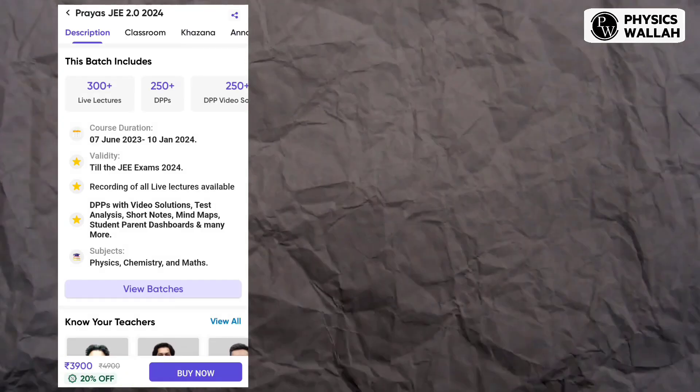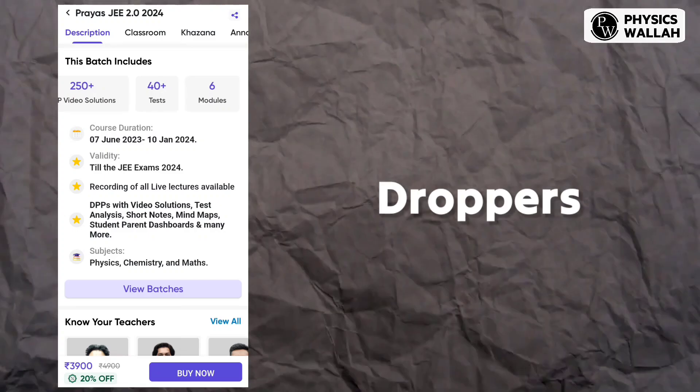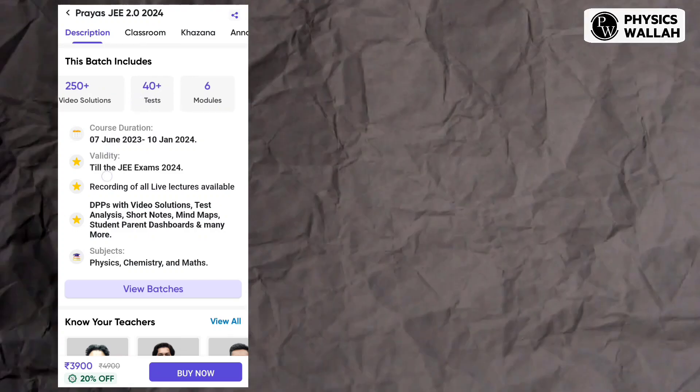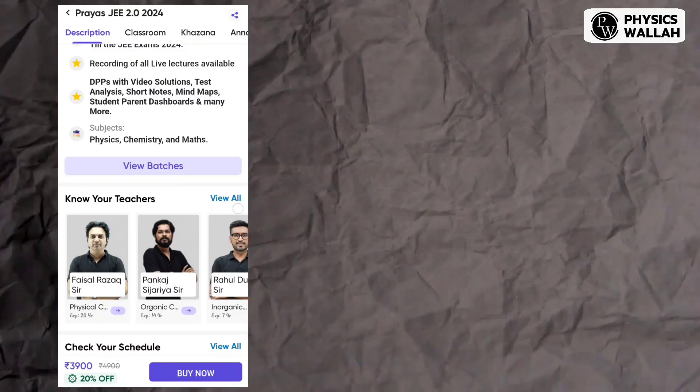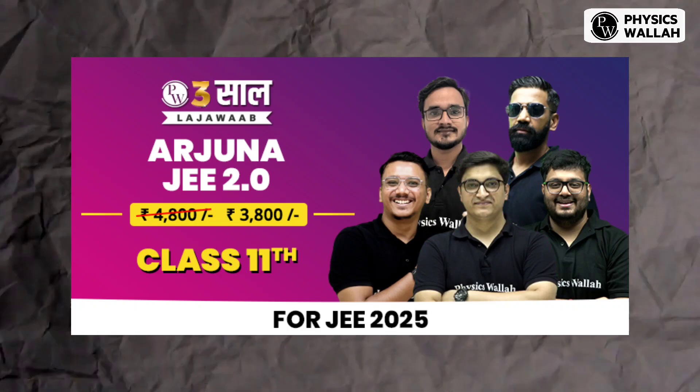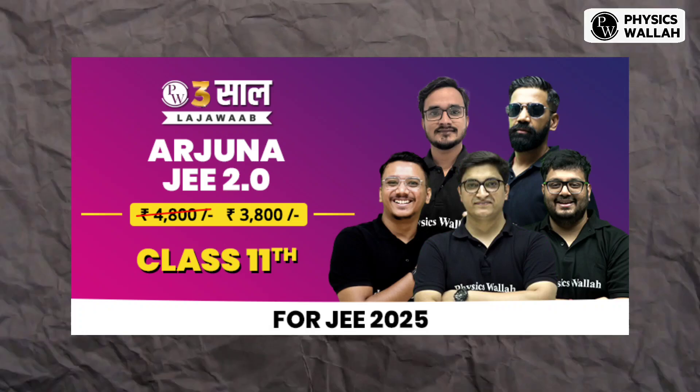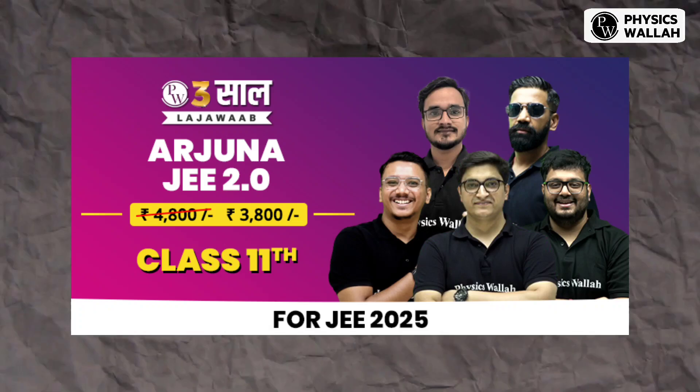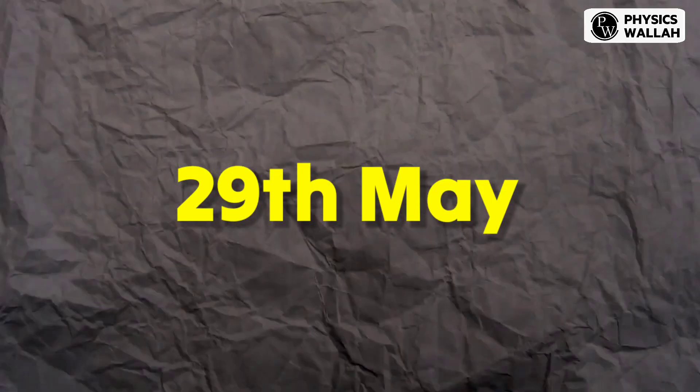So Physics Wallah has launched batches for class 11 and for class 12 and also for droppers. If you want to purchase any batch of Physics Wallah this is the right time. They have released Arjuna JEE 2.0 batch which is for class 11th and it will focus on JEE 2025 and also will help you to get more marks in your board examinations of class 11. This batch is starting from 29th May so try to get it first.